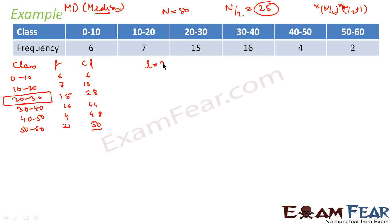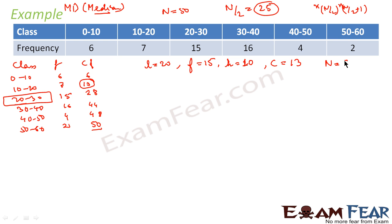Since the median class is 20–30, the lower limit l = 20. The frequency of this class is 15, so f = 15. The width of the class is 30 − 20 = 10, so h = 10. The value of c is the cumulative frequency of the class just preceding the median class — that is 13. We now have all the values: l, f, h, c, and n.